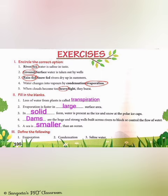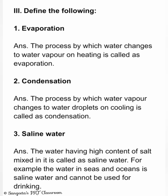Question 3: Define the following. Evaporation — the process by which water changes to water vapour on heating is called evaporation. Condensation — the process by which water vapour changes into water droplets on cooling is called condensation. Saline water — water having a high content of salt mixed in it is called saline water; for example, water in seas and oceans is saline water and cannot be used for drinking.